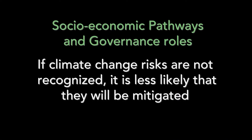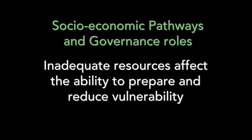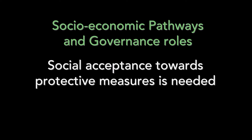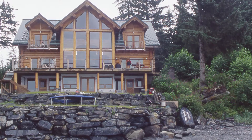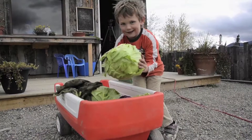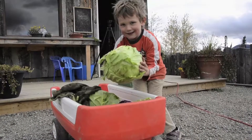Socio-economic context and governance also play important roles in reducing climate risk. If communities don't recognize or believe that a risk is real or significant, they are less likely to take measures to mitigate these risks or support efforts to mitigate them. Poverty or inadequate government resources affect the ability of households and communities to prepare and reduce their vulnerability, even if they want to. There also needs to be a level of social acceptance towards protective measures. Actions taken to mitigate climate risks need to align with social norms, and communities exposed to climate risks need to be educated about those risks and the importance of protective measures. Reducing climate risk ultimately contributes to building resilience to climate change, a central component of the practice of adaptation.